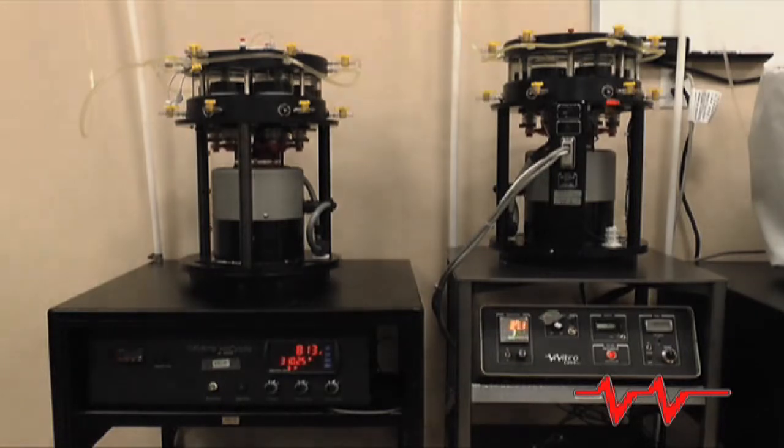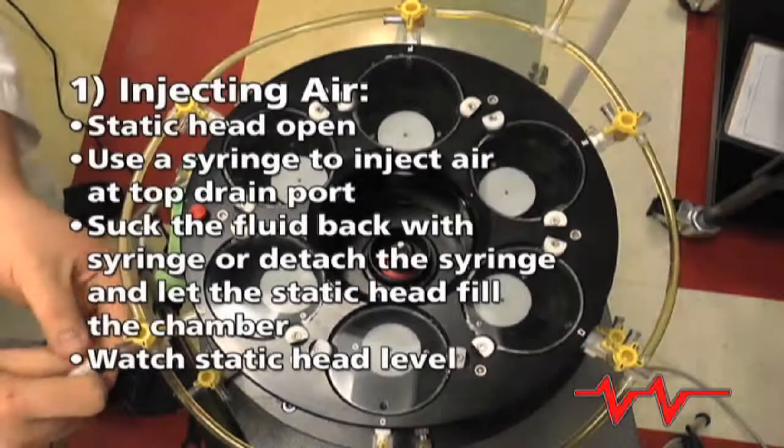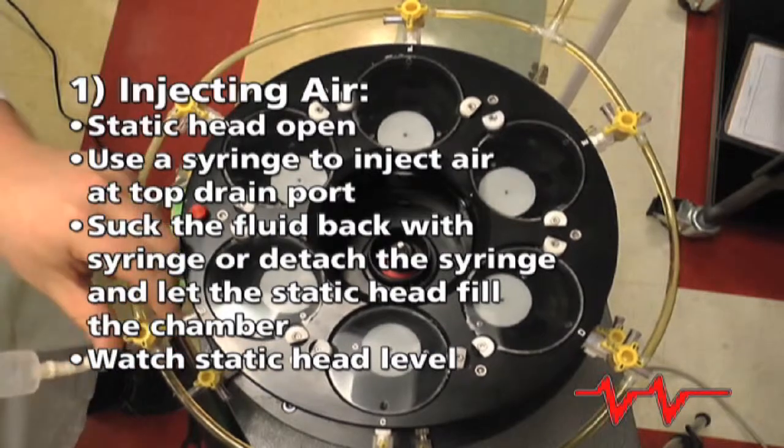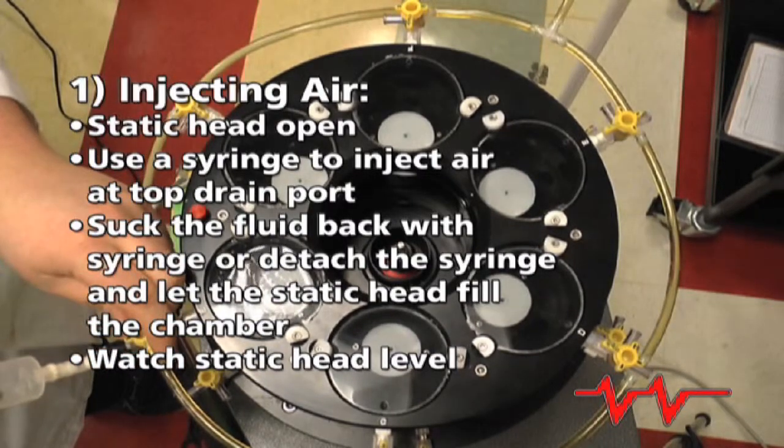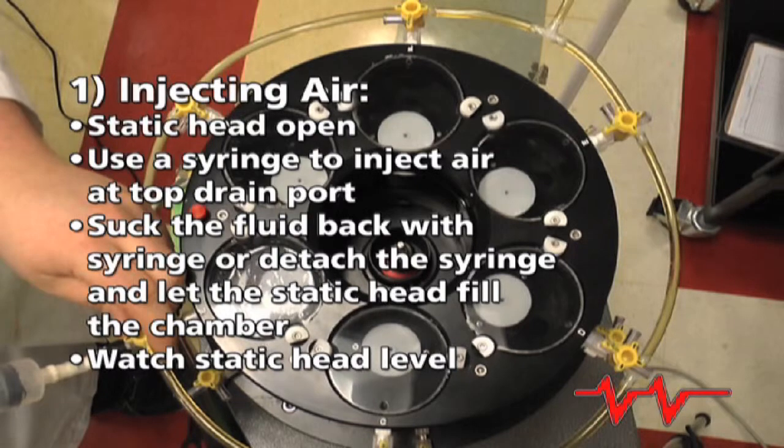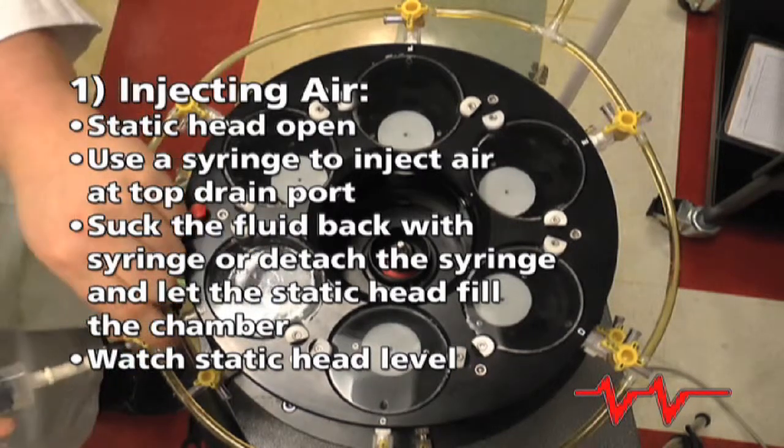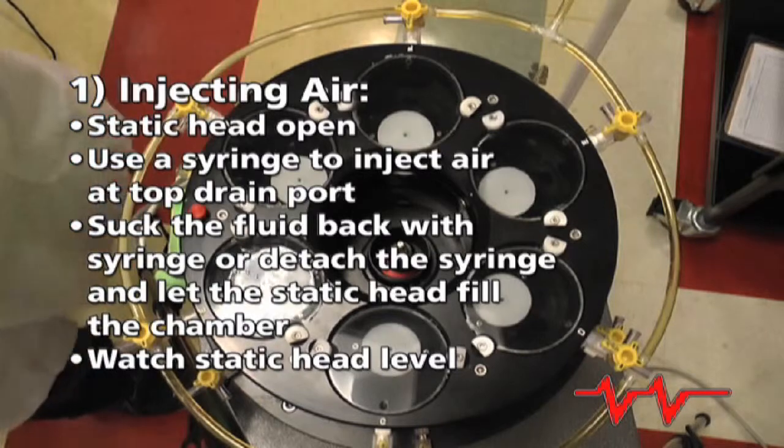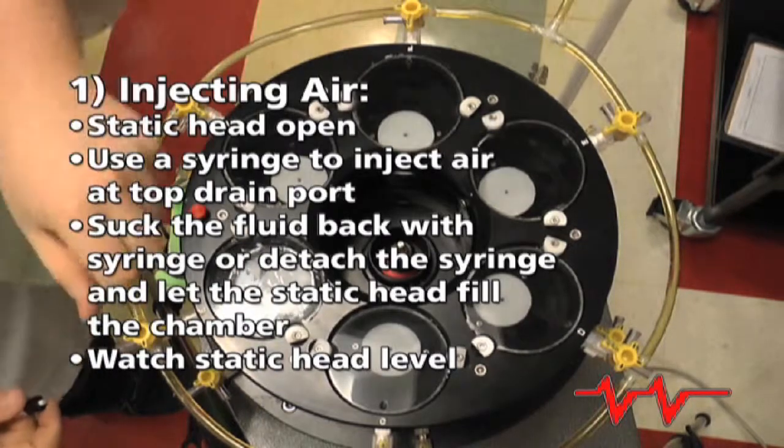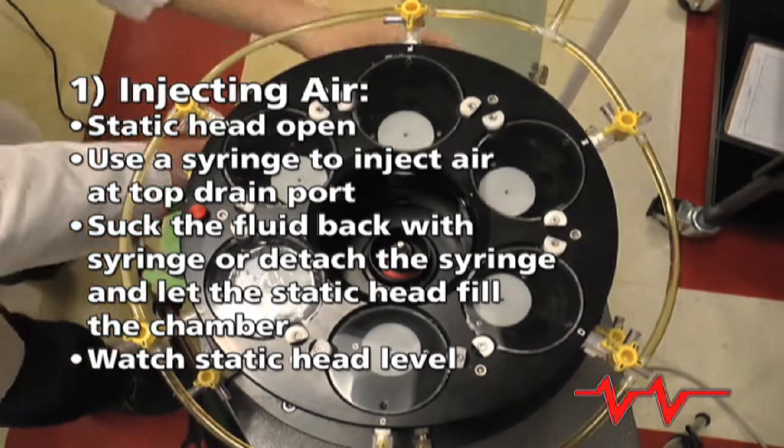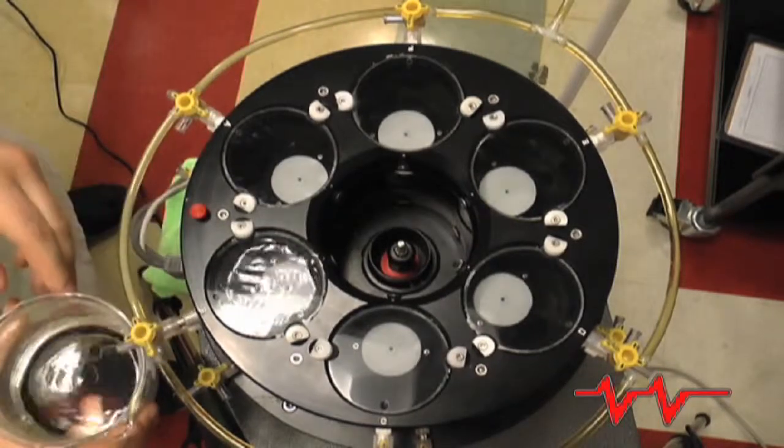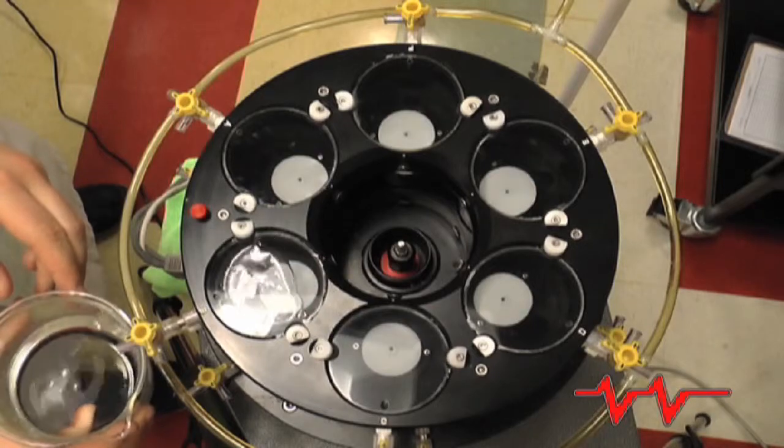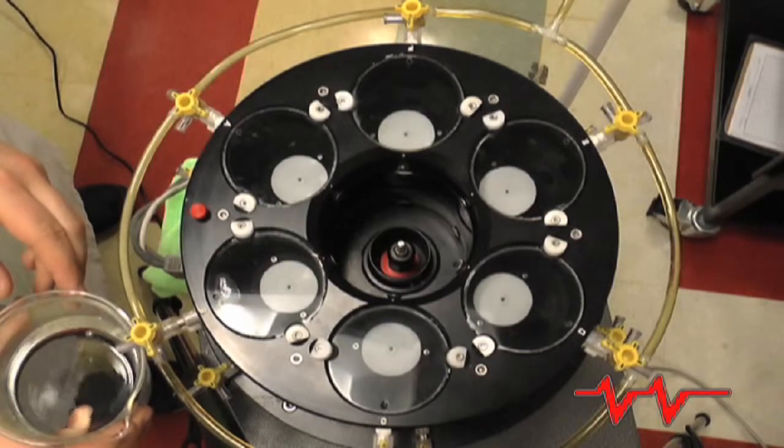There are three techniques we recommend trying. With the static head open, you can use a syringe to inject air at the top drain port until only air is in contact with the window. Then either suck the fluid back with a syringe or detach the syringe to let the static head fill the chamber. With this method, be careful the static head isn't too full or injecting air will cause an overflow. You also don't want the static head to run dry either.